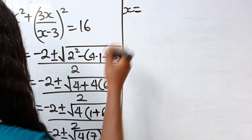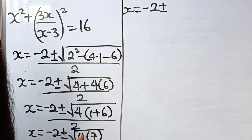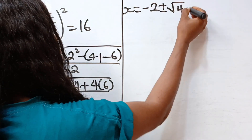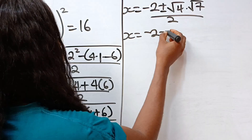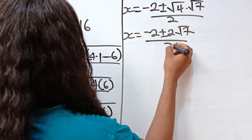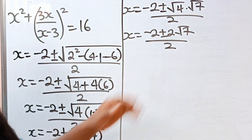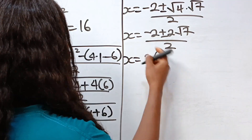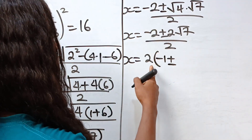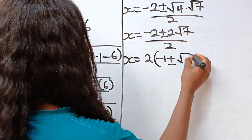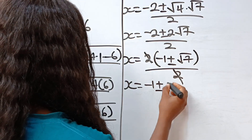So we have x equals minus 2, plus or minus the square root of 4 times root 7, divided by 2. That is minus 2 plus or minus 2 root 7, divided by 2. Factorizing 2 out, minus 2 divided by 2 is minus 1, plus or minus root 7. The 2 cancels. So x is minus 1, plus or minus root 7. This is the first and second value of x.